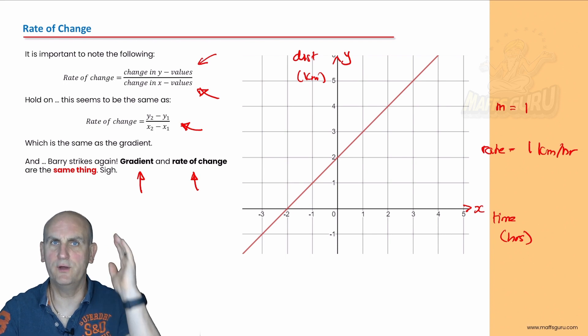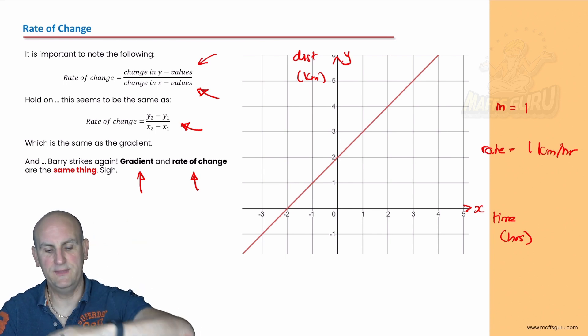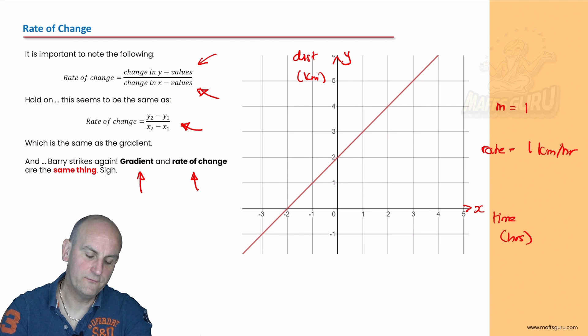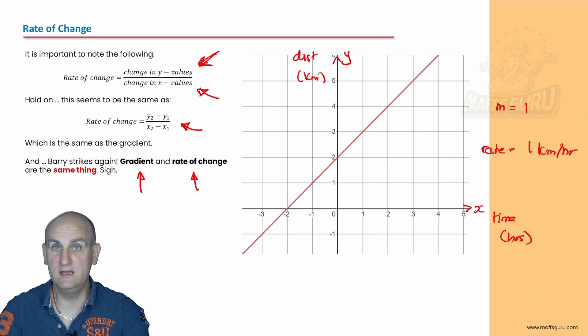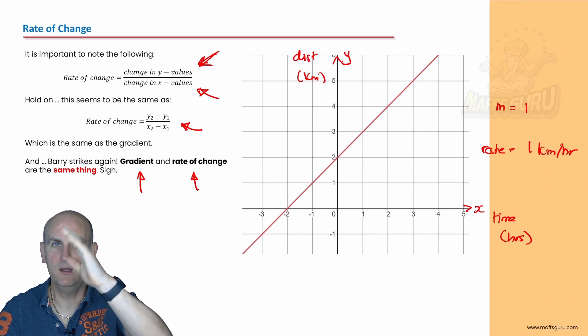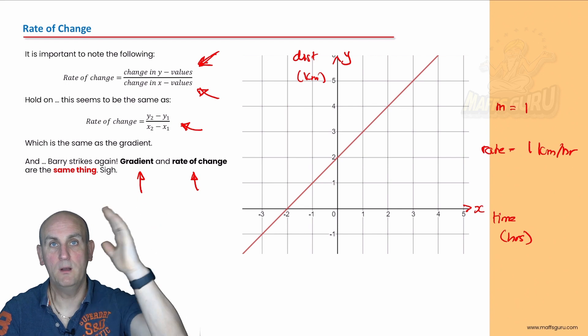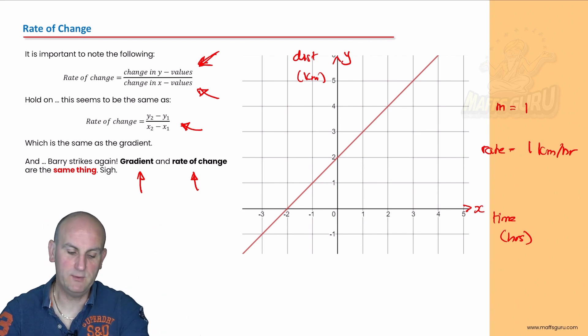And you're going to say, how did I know that I did the kilometres first and then the hour? Well, it was from our formula. Remember, our rate of change is change in Y values divided by change in X values. So that gives you the hint. It is the Y per X. Happy with that? Cool.